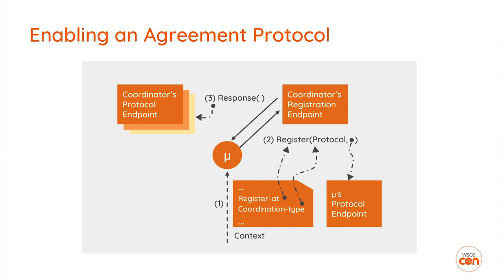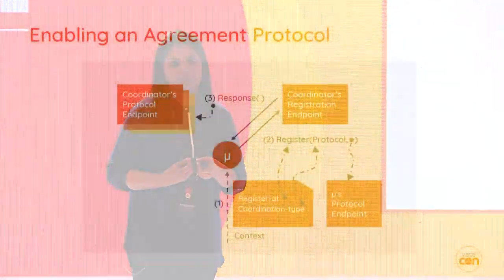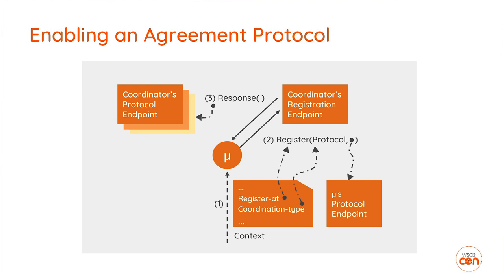When the microservice receives this information, it registers at that URL. The input for that registration request is the actual protocol this microservice supports and an endpoint where the coordinator can send messages to this microservice. In return, the coordinator sends another set of URLs — the endpoints where this microservice can talk to the coordinator to exchange protocol messages. After this agreement protocol phase is completed, all parties know where to communicate.